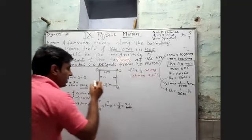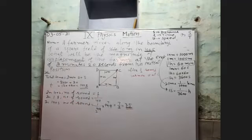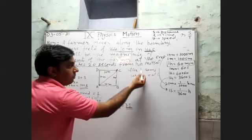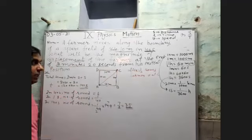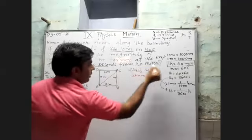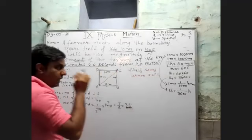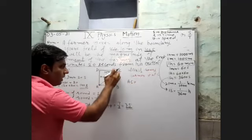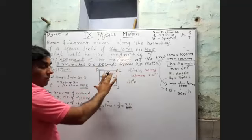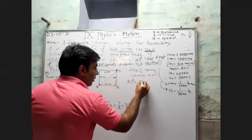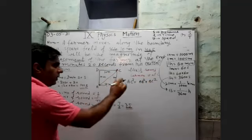The displacement is the distance AC — from initial position A to final position C. Since ABCD is a square, triangle ABC is a right-angle triangle. Using Pythagoras theorem: AC squared equals AB squared plus BC squared.